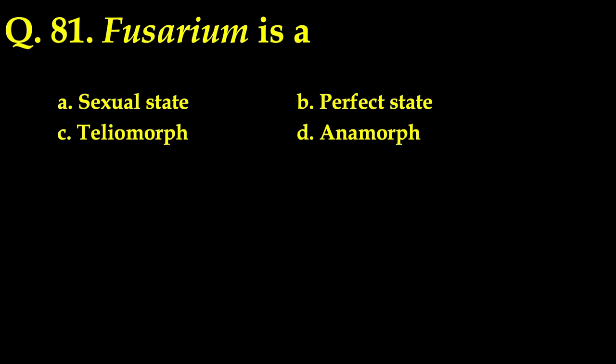The next question: Fusarium is a — out of the options sexual state, perfect state, teleomorph, and anamorph — the correct answer is anamorph. Fusarium is the asexual state, imperfect state, or anamorphic state of Gibberella. That means Gibberella is the sexual state, perfect state, or teleomorphic state of Fusarium.